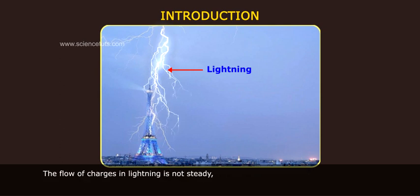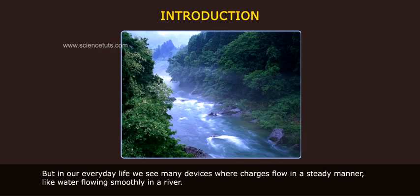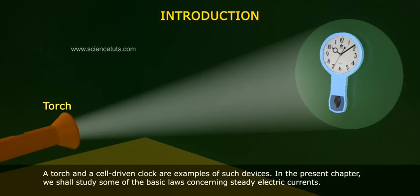The flow of charges in lightning is not steady, but in our everyday life we see many devices where charges flow in a steady manner, like water flowing smoothly in a river. A torch and a cell-driven clock are examples of such devices.